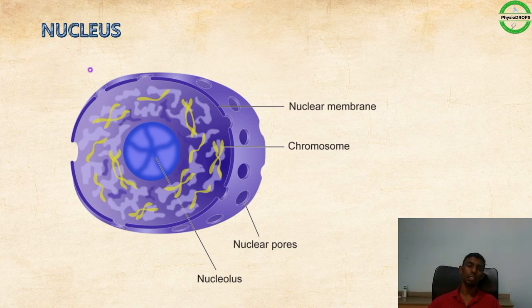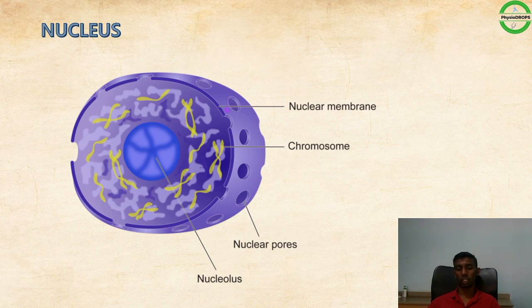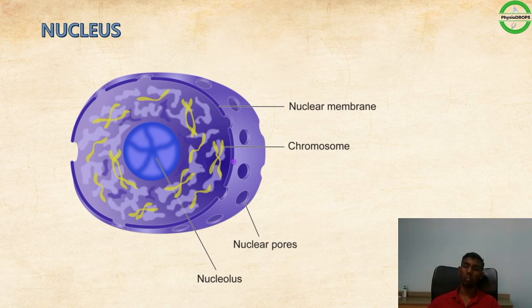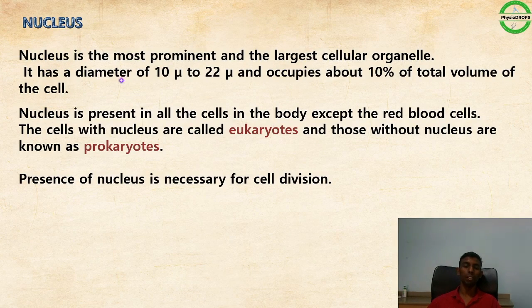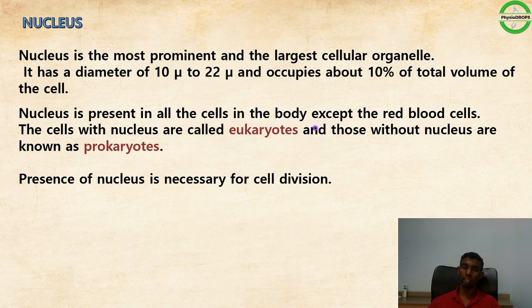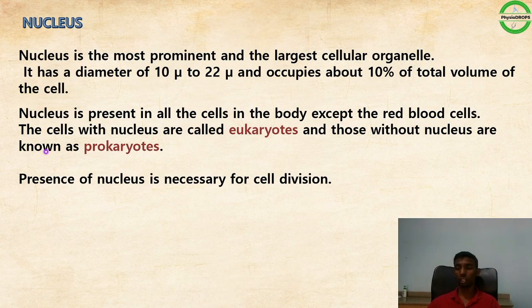The nucleus is the most prominent and largest cellular organelle, with a diameter of 10–22 µm, occupying about 10% of the total cell volume. It is present in all cells except red blood cells. Cells with a nucleus are called eukaryotes; those without are prokaryotes. The nucleus contains nuclear membrane, nucleoplasm, chromatin, and chromosomes. The nuclear membrane is the outer layer, formed by double-pored membranes, allowing communication between nucleoplasm and cytoplasm.